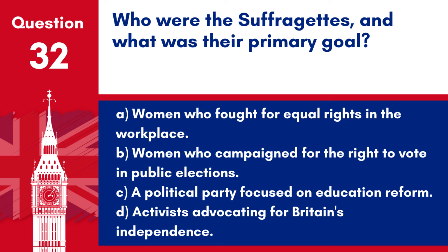Question 32. Who were the suffragettes and what was their primary goal? a. Women who fought for equal rights in the workplace. b. Women who campaigned for the right to vote in public elections. c. A political party focused on education reform. d. Activists advocating for Britain's independence. Answer: b. The suffragettes were activists in the early 20th century who campaigned vigorously for women's suffrage, the right to vote in public elections.